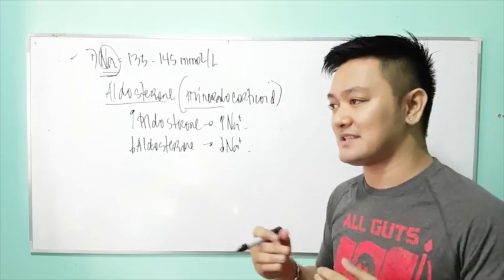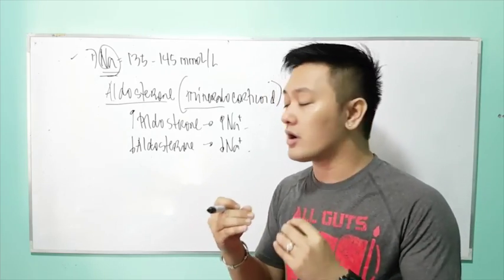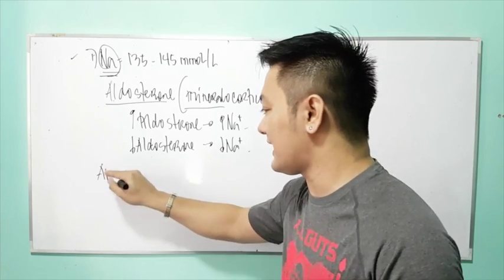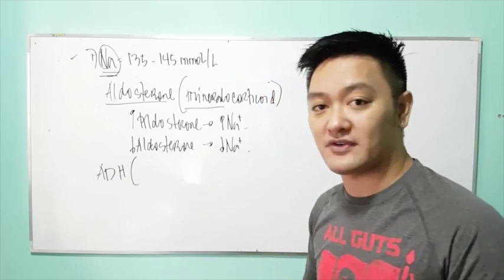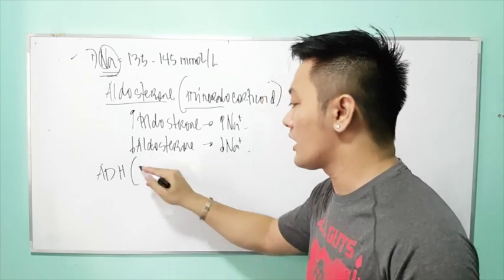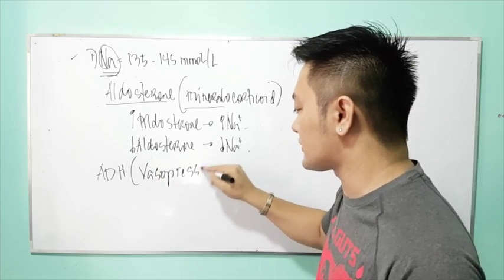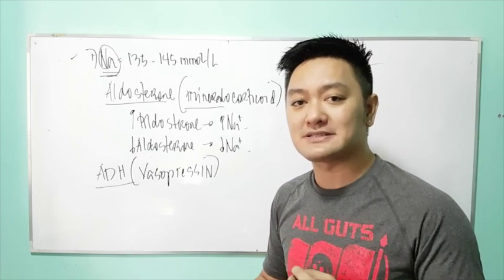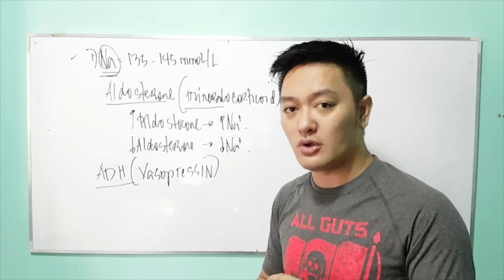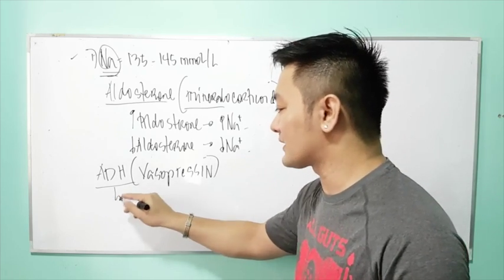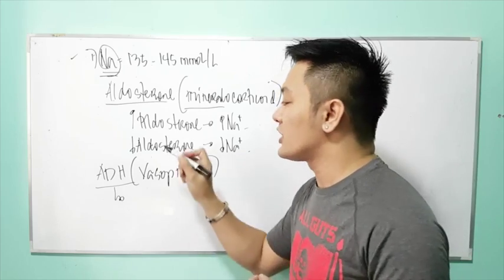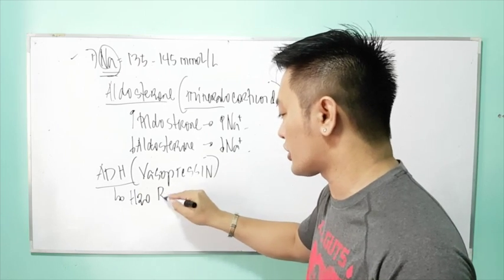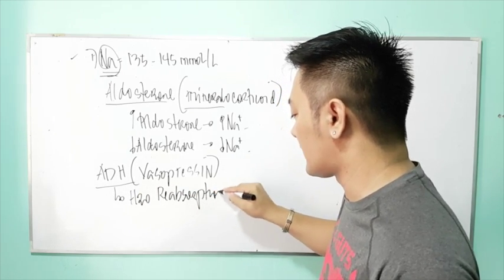In your examination, sodium imbalances are usually associated with ADH abnormalities. ADH stands for antidiuretic hormone, also called vasopressin. Your ADH is produced by the posterior pituitary gland, also called the neurohypophysis. ADH or vasopressin is important for water reabsorption. If there is too much antidiuretic hormone, more water is being reabsorbed.